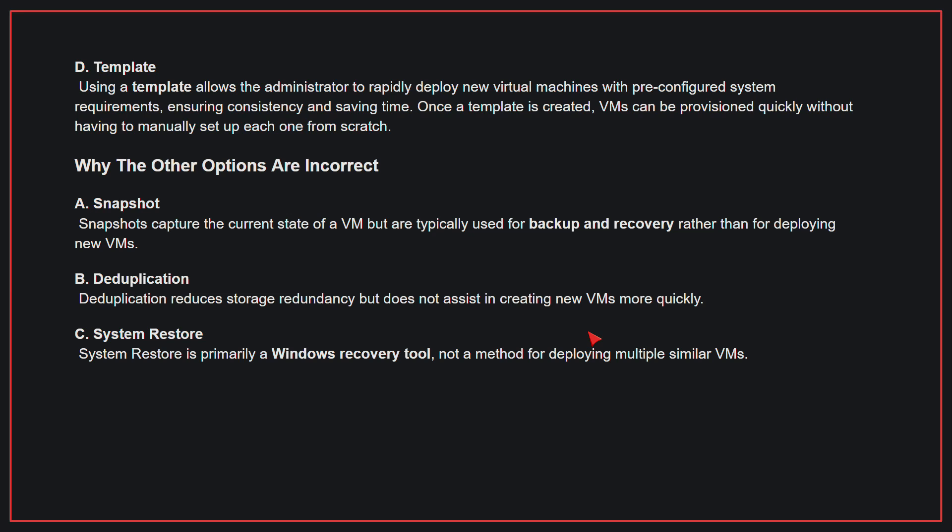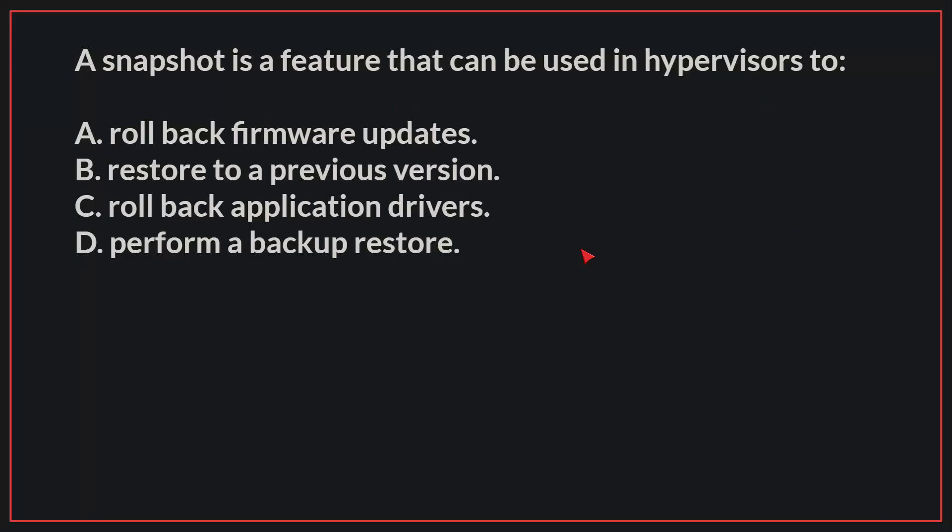Why the other options are incorrect: A, Snapshot — snapshots capture the current state of a VM but are typically used for backup and recovery, rather than for deploying new VMs. B, Deduplication — deduplication reduces storage redundancy but does not assist in creating new VMs more quickly. C, System restore — system restore is primarily a Windows recovery tool, not a method for deploying multiple similar VMs. Therefore, the correct answer is D: Template.